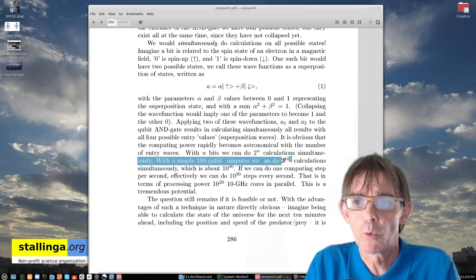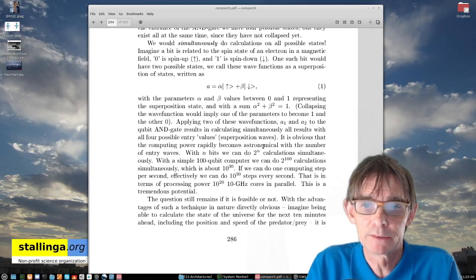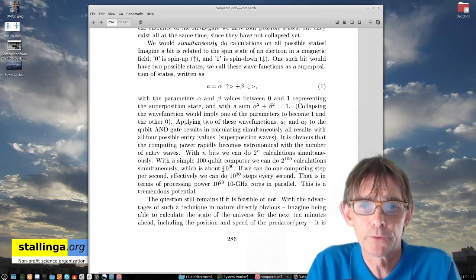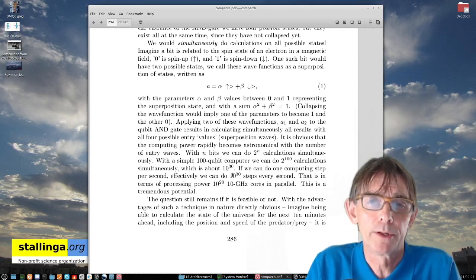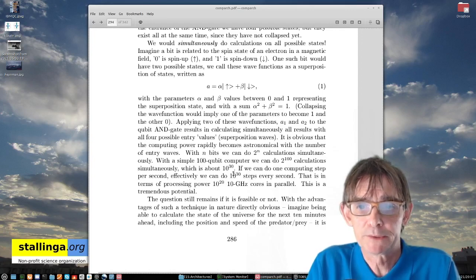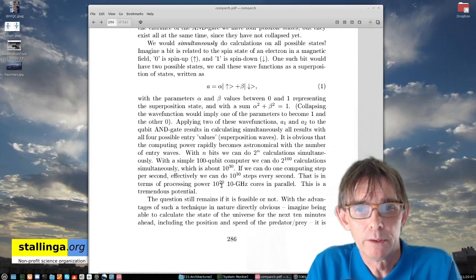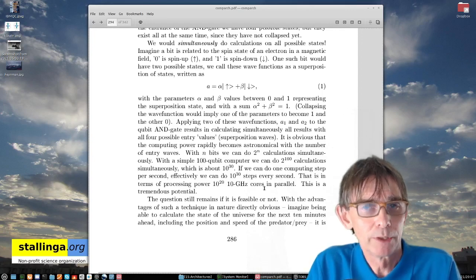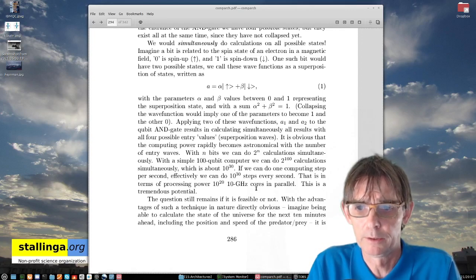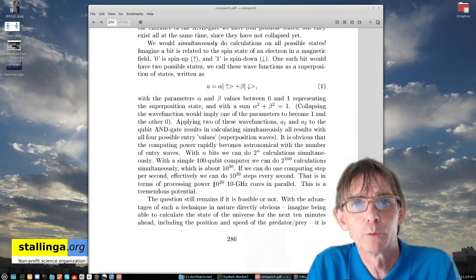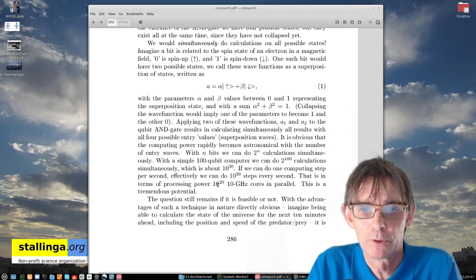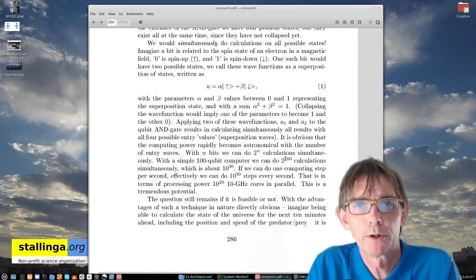But if you have 100 bits, then you can do 2 to the power 100 calculations simultaneously. And to give you an idea, that is about 2 to the power 100 is about 10 to the power 30. So if you do one calculation per second, effectively you're doing 10 to the power 30 calculations per second. And that is then about 10 to the power 20 10 gigahertz cores in parallel. So you can get the idea as if you have 10 to the power 20 very strong computers working in parallel. I don't think that there are so many computers in the world. And actually, this would be, it's like astronomical amounts of processing power, if you just have 100 bits.